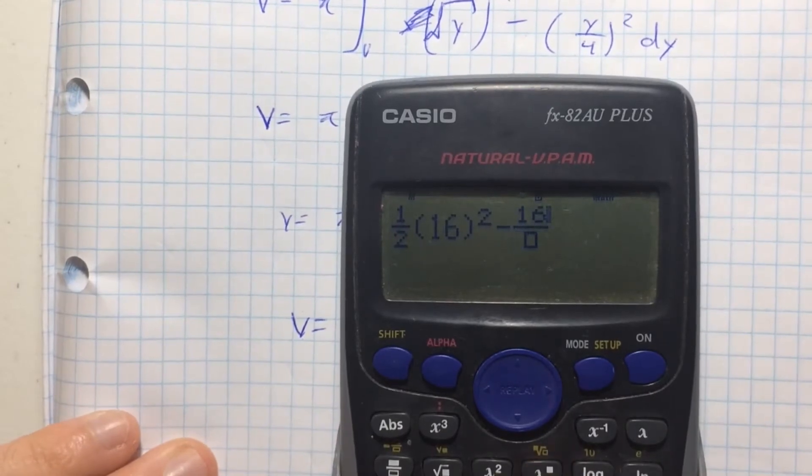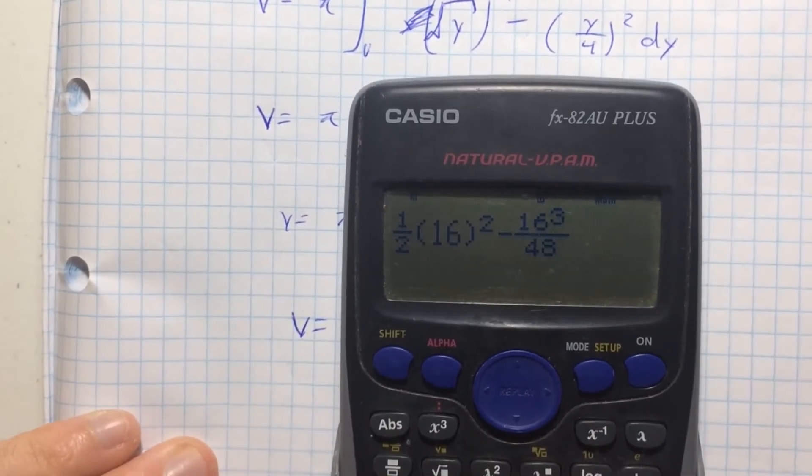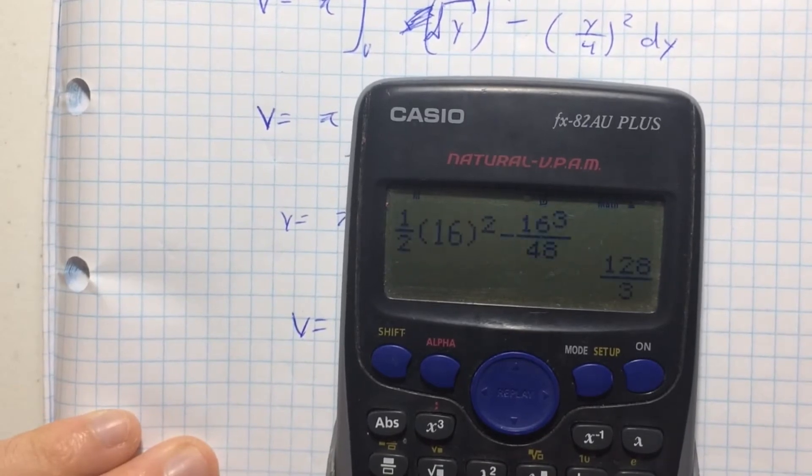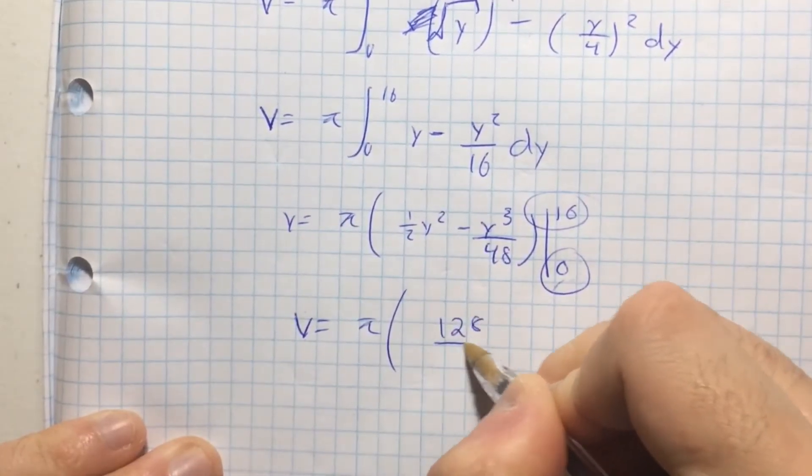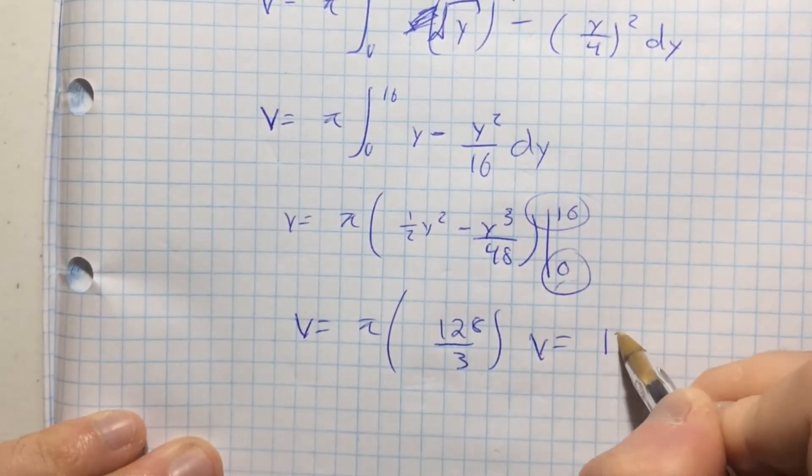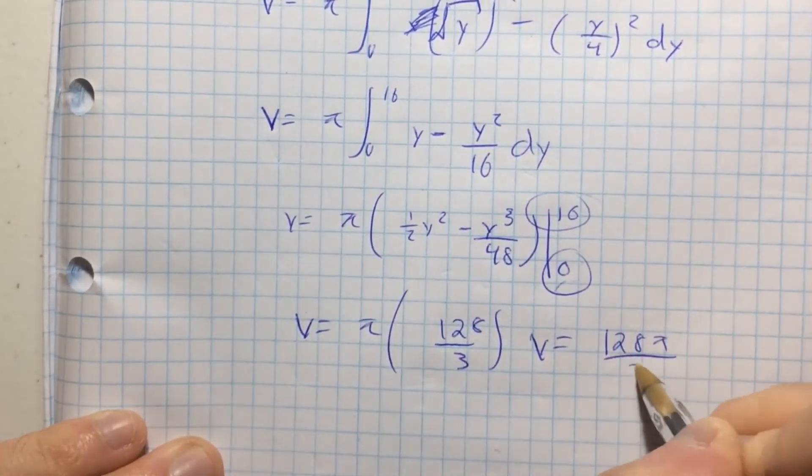So 16 cubed over 48. Alright, so that is, this should give me, alright cool. And that's 128 over 3 and therefore the volume is equal to 128 pi over 3.